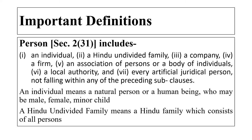Please remember these important definitions given under this unit. The first one is 'Person', under Section 2 clause 31. You have to remember the sections because most of the time you will receive questions in 'match the following' format where you match the definition name with the section. The person includes: an individual, the Hindu Undivided Family, a company, a firm, an association of persons or a body of individuals, a local authority, and every artificial juridical person.